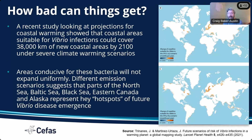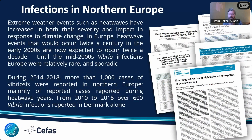So how bad can things get? This is what we're really worried about at the moment. There are different hotspots emerging around the world. This is a study from a collaborator of mine, Jaime Martinez in Barcelona, looking at projections for coastal warming around the world by the end of the century. It shows that these pathogenic bacteria are going to emerge not everywhere and all at the same rate, but in different hotspots: the Baltic Sea, the Black Sea, the northeast coast of the United States, parts of Canada, and parts of Southeast Asia as well.